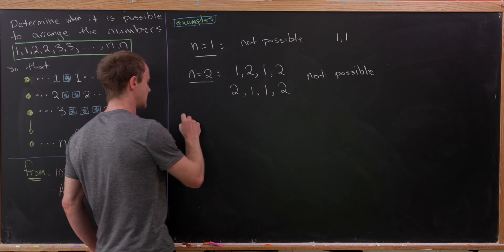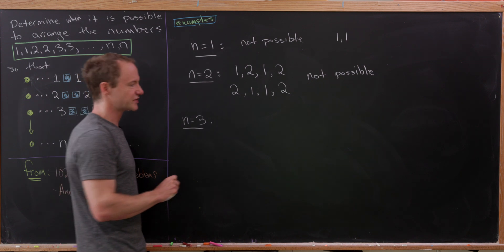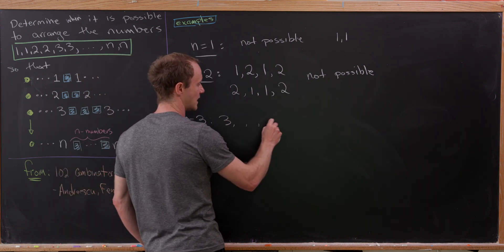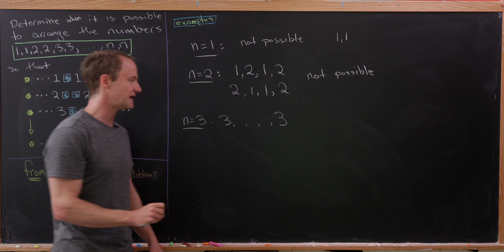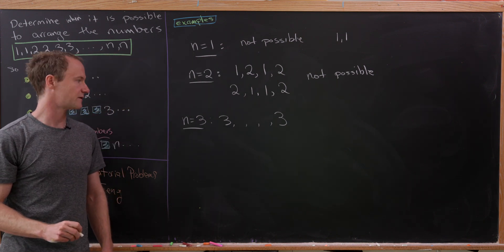So all in all, it is not possible to make an arrangement with N equals 2. Let's look at N equals 3. Let's maybe start with the number 3 and notice we're going to need 3 numbers between the appearance of 3 and itself.